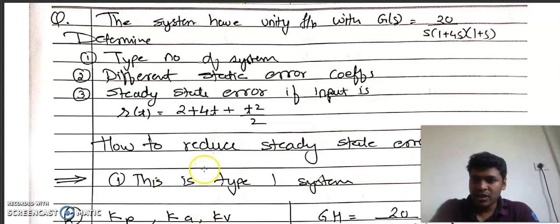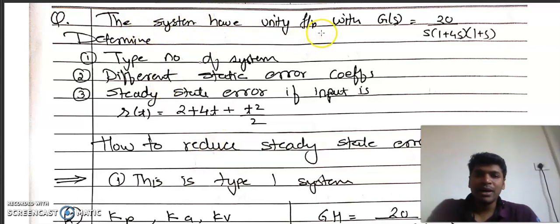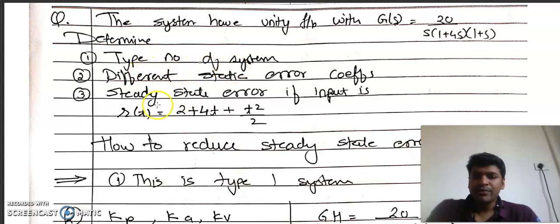Let us start our discussion with the last problem of this chapter. The question is: the system has unity feedback with G(s) = 20 / [s(1+4s)(1+s)]. What we need to do: we need to determine the type number of the system, then the different static error coefficients, and the steady state error if input is r(t).